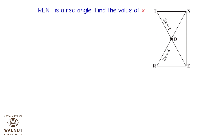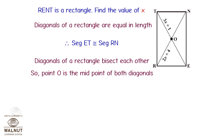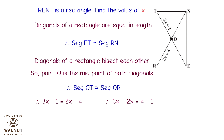RENT is a rectangle. Find the value of X. Diagonals of a rectangle are equal in length, so segment ET is congruent to segment RN. Diagonals of a rectangle bisect each other, so O is the midpoint of both diagonals. Therefore segment OT equals segment OR, giving 3X + 1 = 2X + 4. So X = 3.